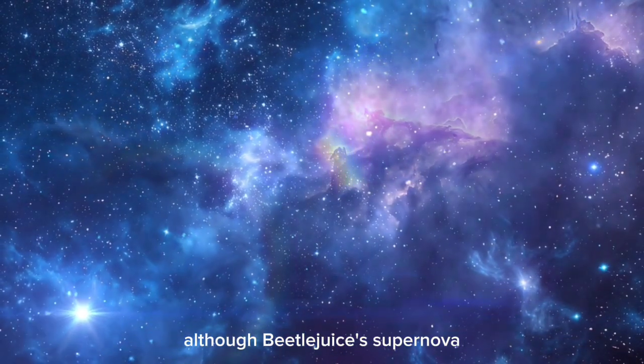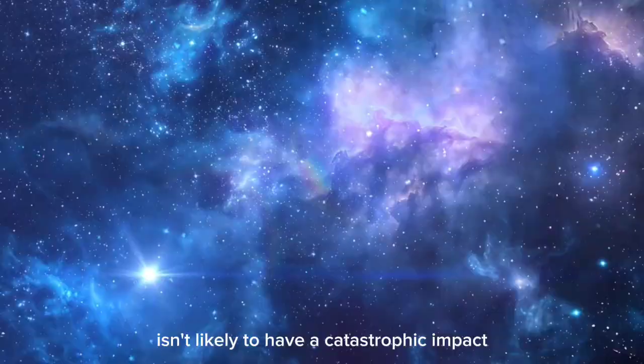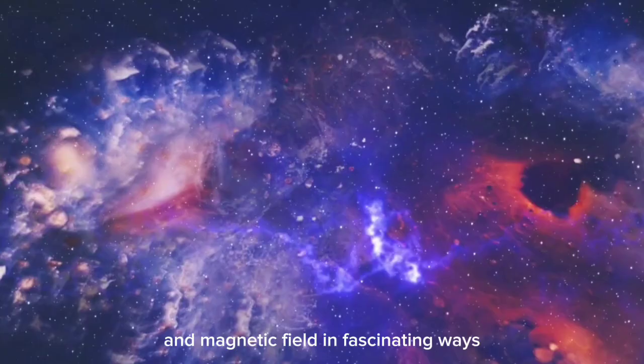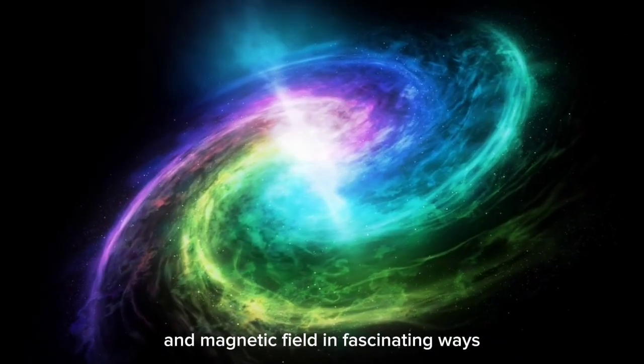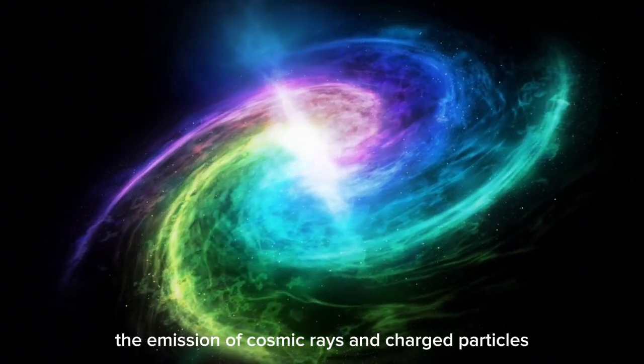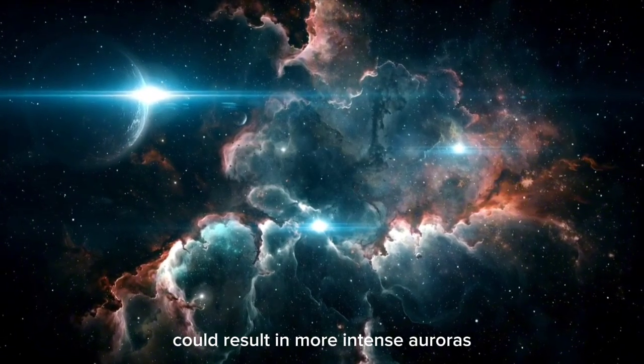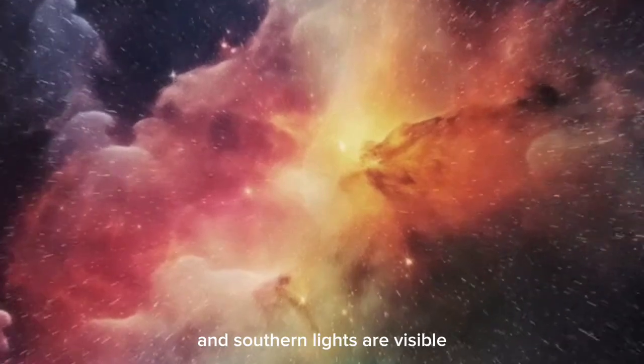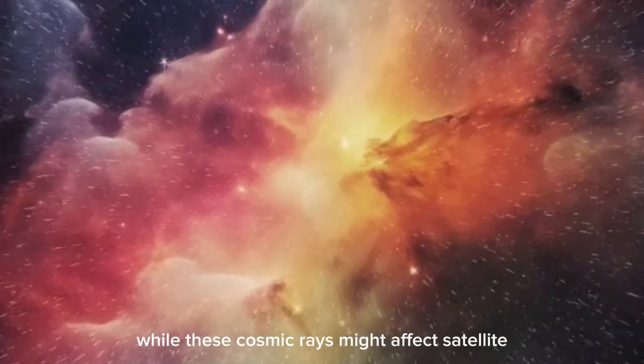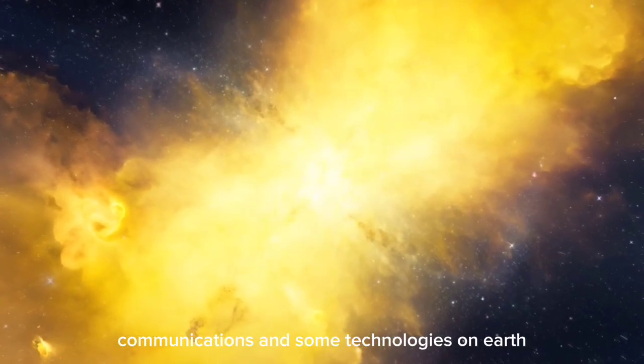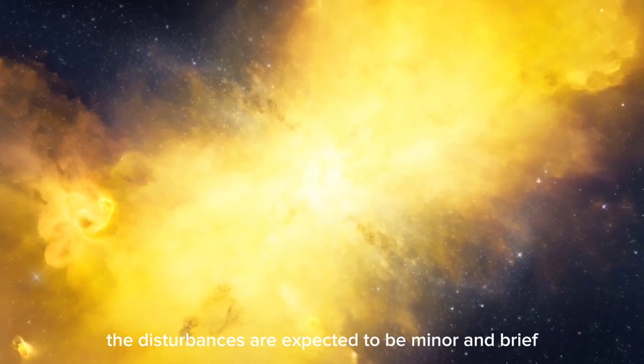Although Betelgeuse's supernova isn't likely to have a catastrophic impact on Earth, it will interact with our planet's atmosphere and magnetic field in fascinating ways. The energy burst from the explosion, particularly the emission of cosmic rays and charged particles, could result in more intense auroras, extending the regions where the northern and southern lights are visible. While these cosmic rays might affect satellite communications and some technologies on Earth, the disturbances are expected to be minor and brief.